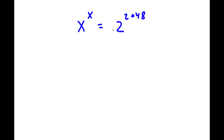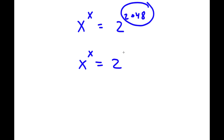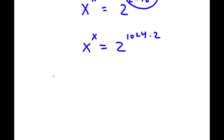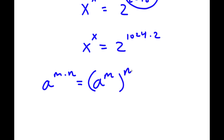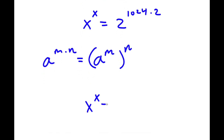The first thing I'm going to do is write 2048 as 1024 times 2. If I have something in the form a to the power of m times n, this is equal to a to the power of m to the power of n. So 2 to the power of 1024 times 2, I can rewrite as 2 to the power of 2 to the power of 1024.